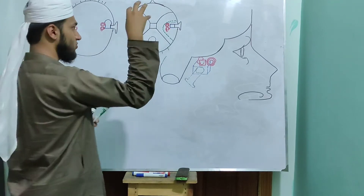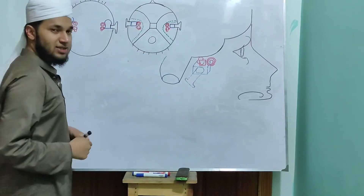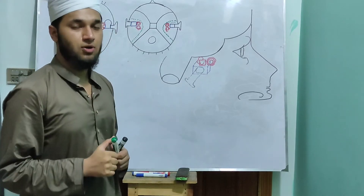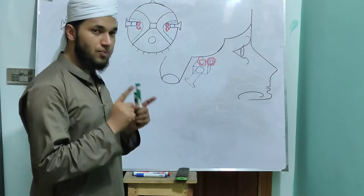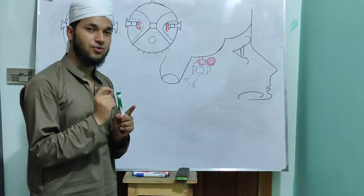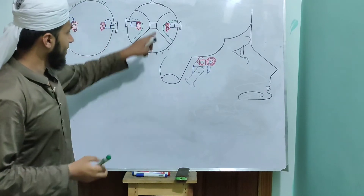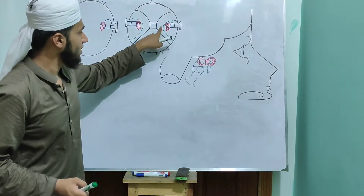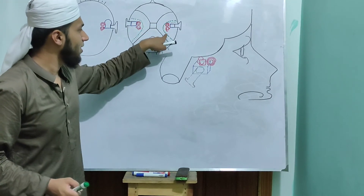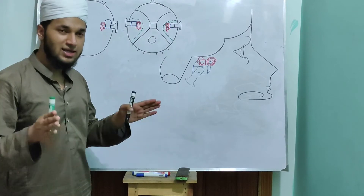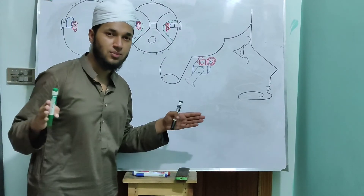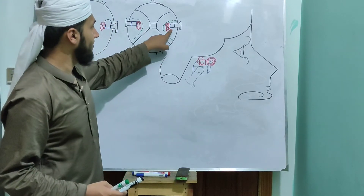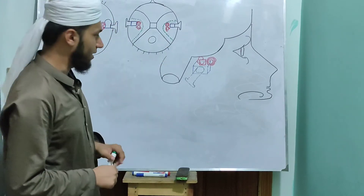This is the superior view. This is the petrous part of the temporal bone. The middle cranial fossa floor is present here. In the middle cranial fossa, this is the petrous part of the temporal bone. In that bone, we have the internal ear or middle ear located here.